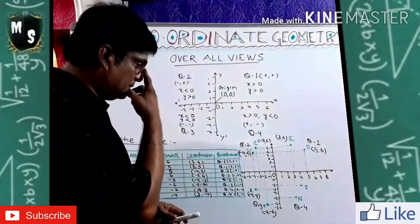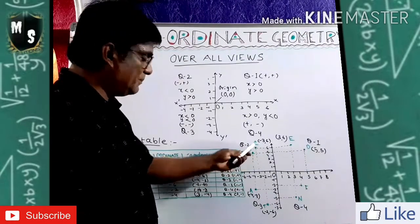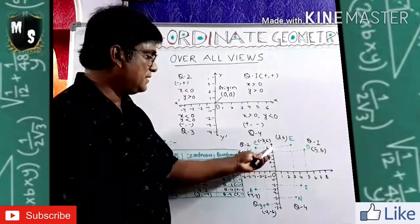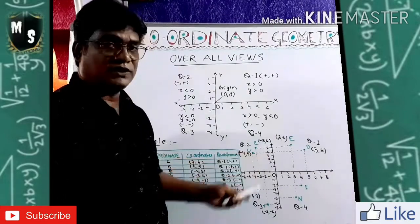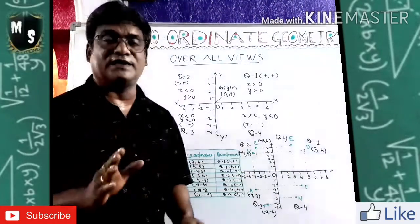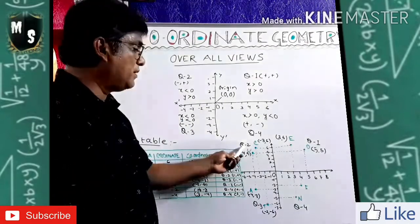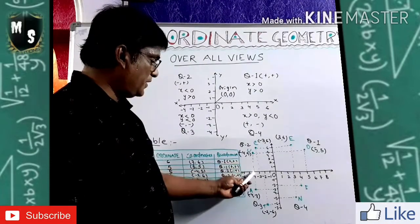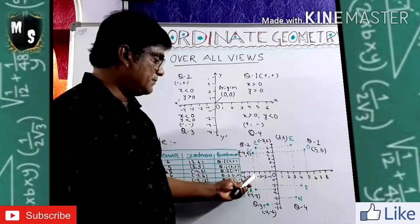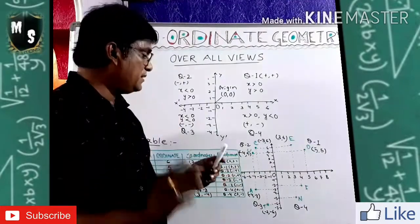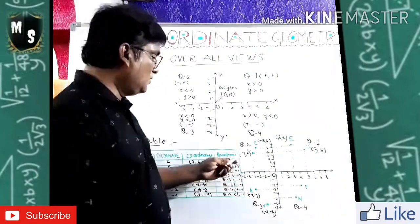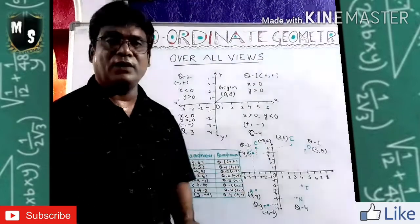For point C in quadrant two: drop perpendicular to X-axis meeting at minus 3 and to Y-axis meeting at 6. Coordinate pair is (-3, 6) — negative X, positive Y — minus-plus — quadrant two. For point U: perpendicular meets at X = -4 and Y = 5. Coordinate pair is (-4, 5) — minus-plus — also belonging to quadrant two.